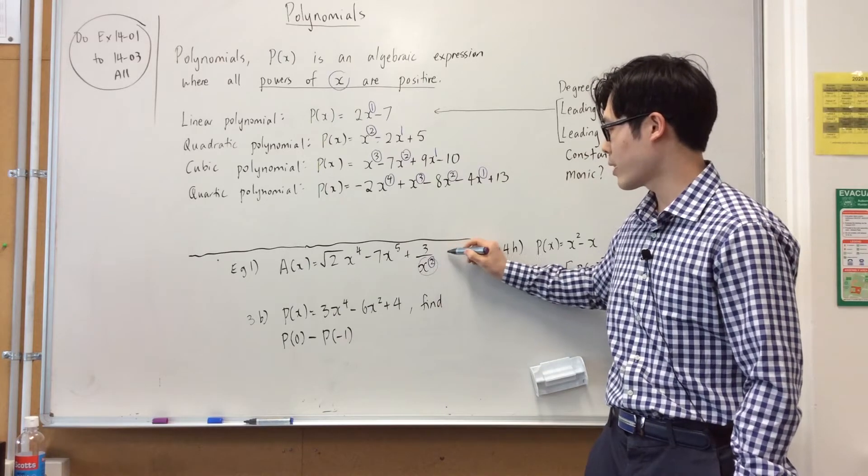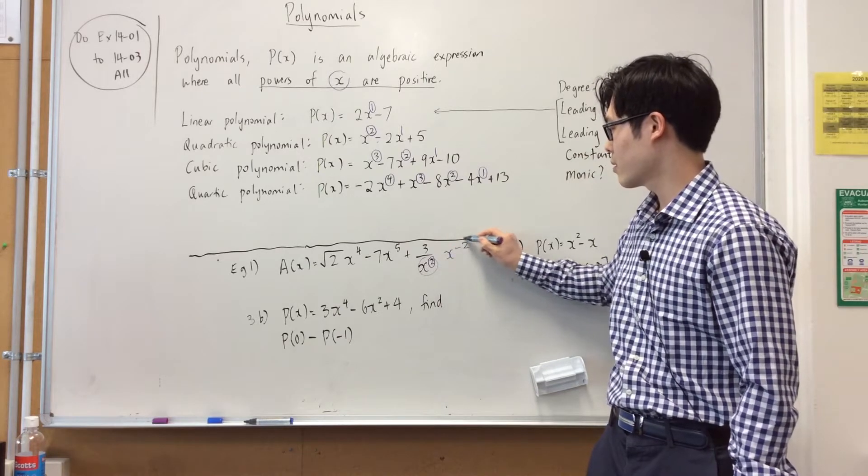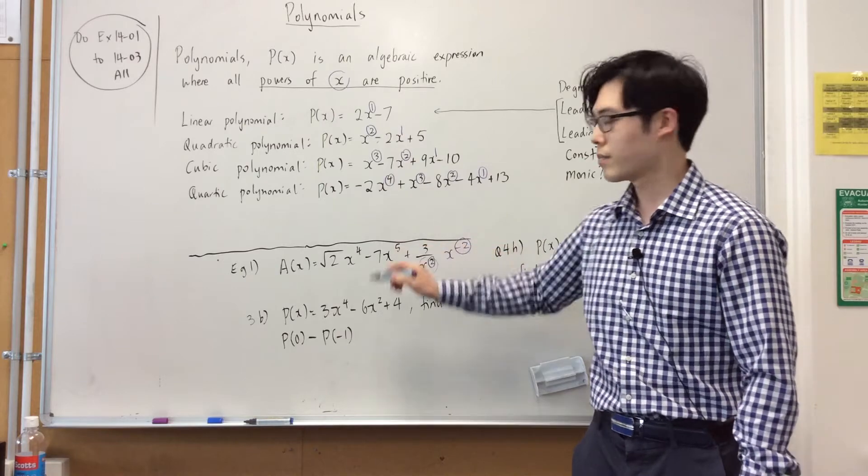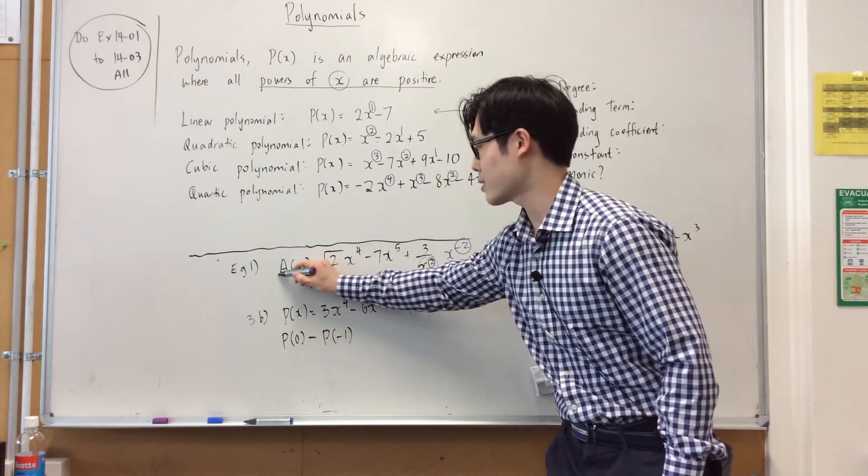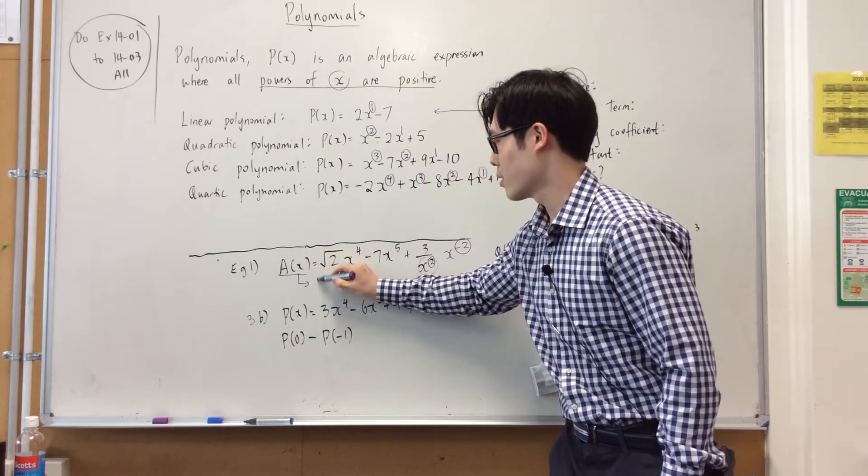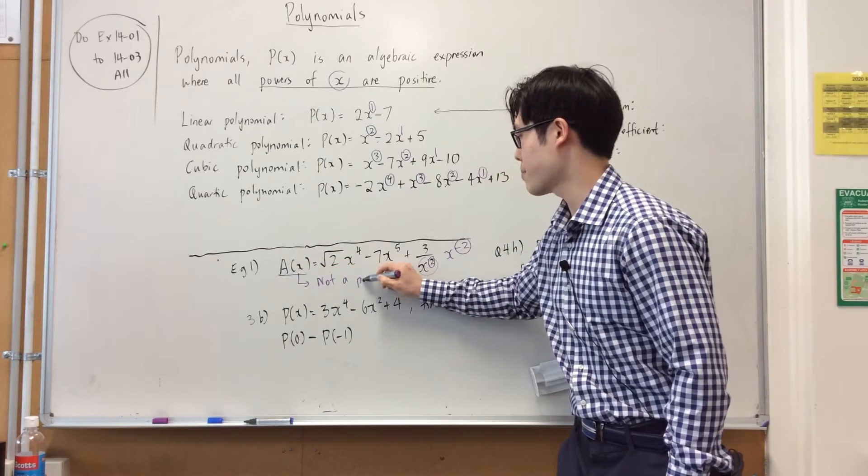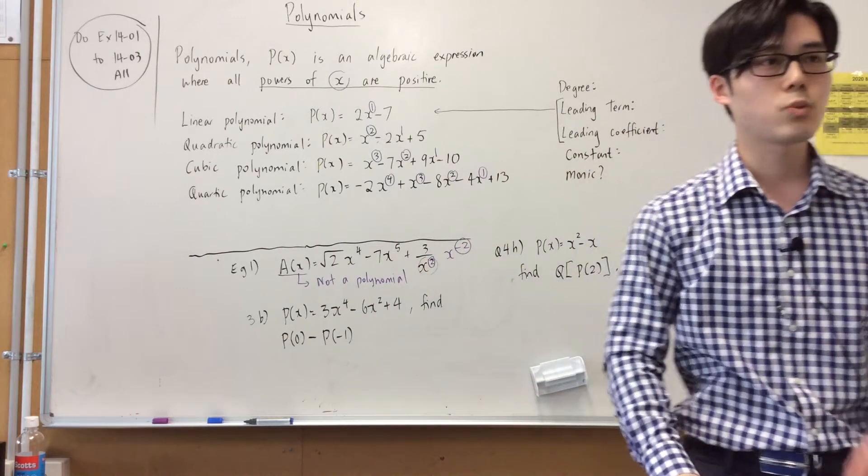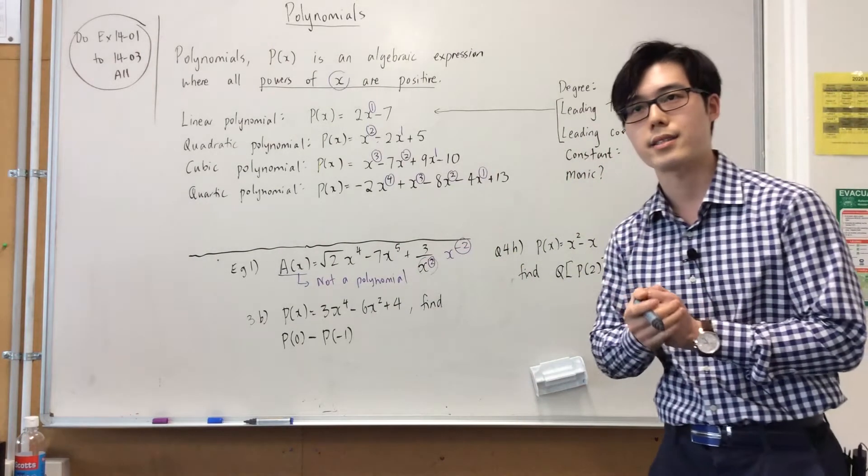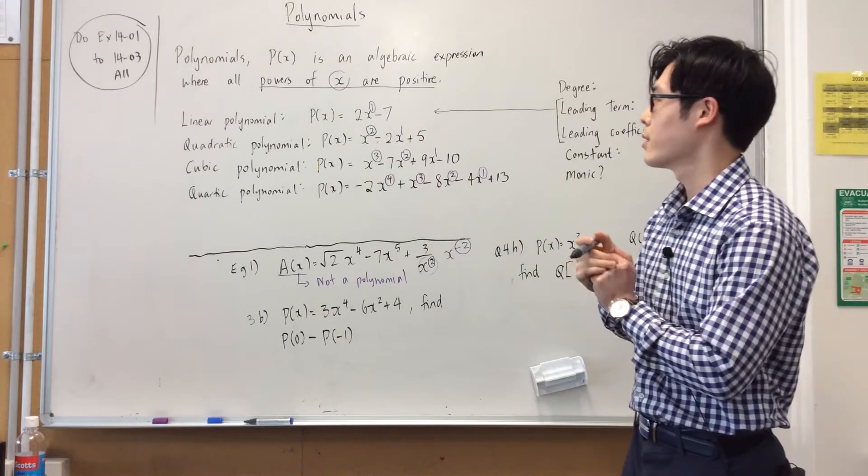Minus 2. Yeah, this, if I write it as a positive indice, it's a negative power. Okay? So this a(x) is not a polynomial. Okay? Because the power is negative. As soon as one x has a negative power, it's not a polynomial. Alright?